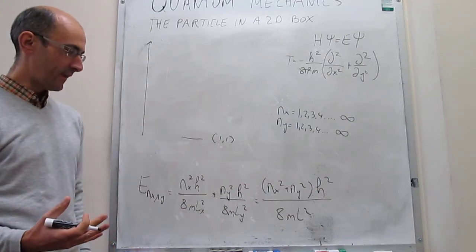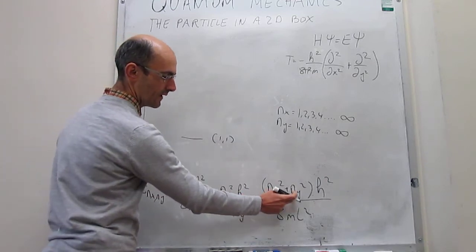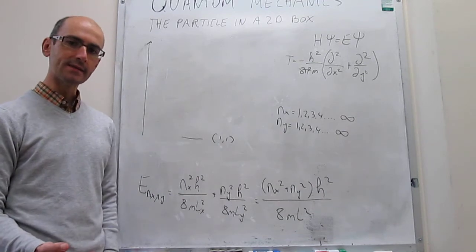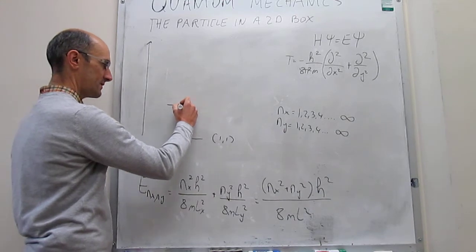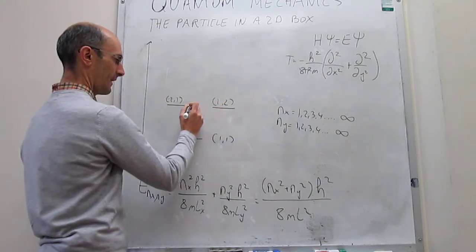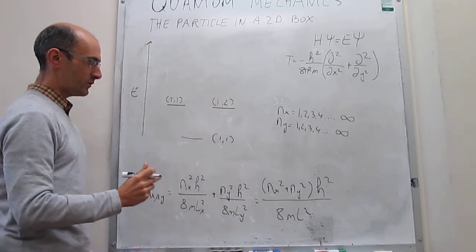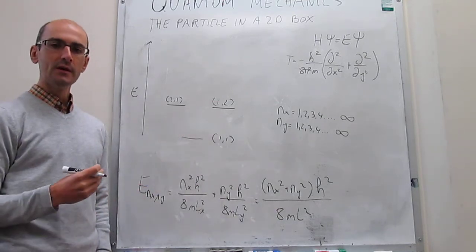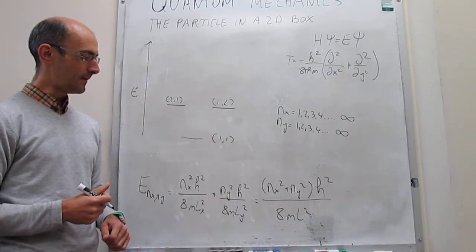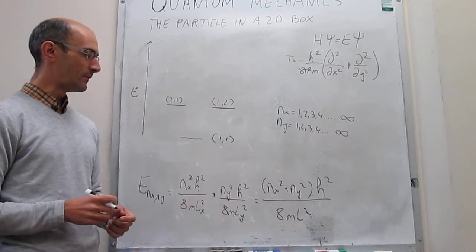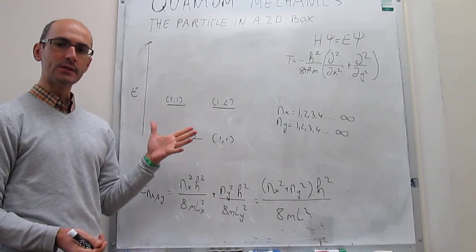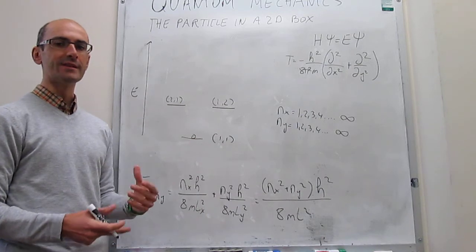When we look for the next energy state, we could either make nx = 2 and ny = 1, or nx = 1 and ny = 2. It turns out that the energy of those two states would be exactly the same. So the next energy state is the 2,1 or 1,2 state, and the energy of these two states is exactly the same. When you get this situation, you say that these energy states are degenerate. If you want to excite a particle to that higher energy, in principle you have 2 states you can land in, both with exactly the same energy — that's called degeneracy.